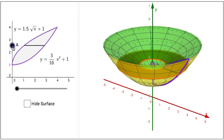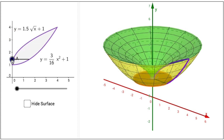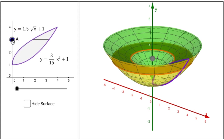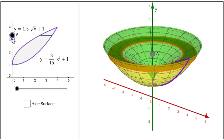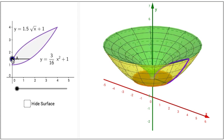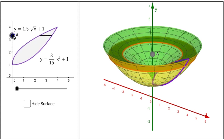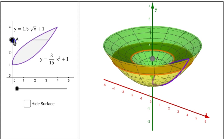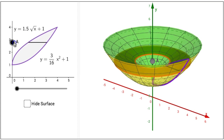If you click on point A, you can slide point A up and down the y axis between y equals 1 and y equals 4. Notice as you drag point A, the volume element or washer in the 3D view on the right changes its size.